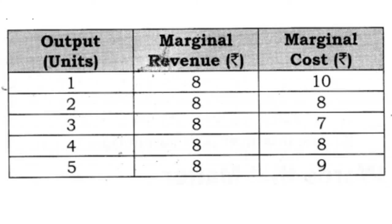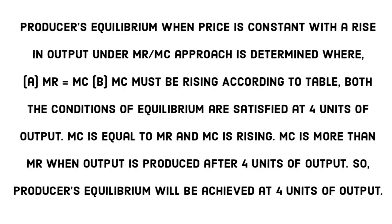Now, what is producer equilibrium when price is constant? When the price of goods or service is constant with the rise in output, under the marginal revenue and marginal cost approach, equilibrium is determined where marginal revenue equals marginal cost, and the marginal cost must be rising.